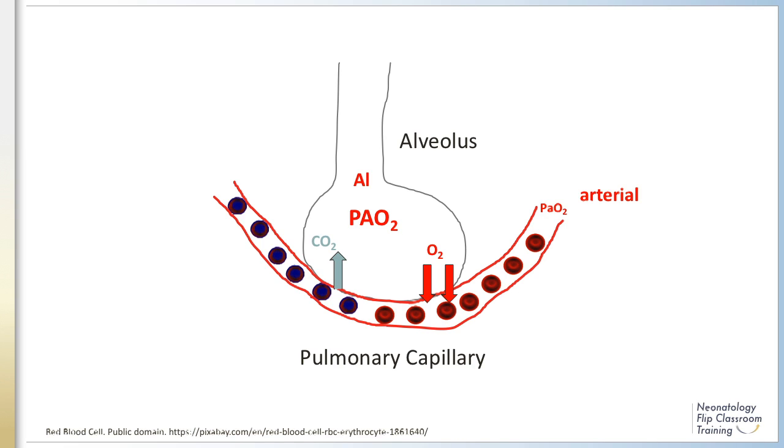Once the oxygen diffuses into the pulmonary capillaries, it then needs to join with hemoglobin for transport. Obstruction to diffusion can disrupt oxygen uptake. A common example in the NICU is pulmonary edema. An uncommon condition is alveolar capillary dysplasia, where the capillaries are not in contact with the alveoli.